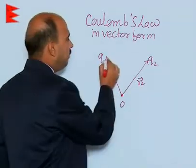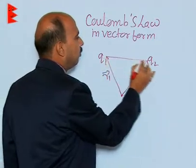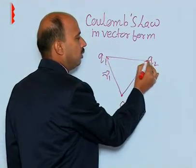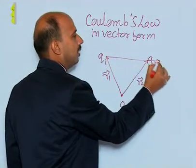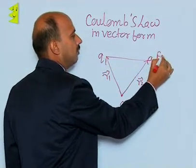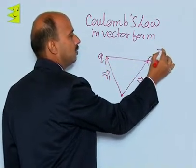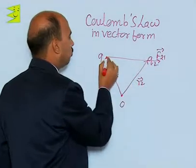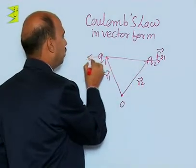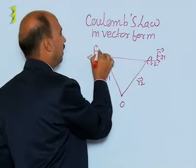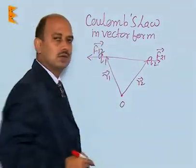Now, if you are taking force on 2 due to 1, it is here F21 to this side, and force on 1 due to 2 is here F12 to this side.